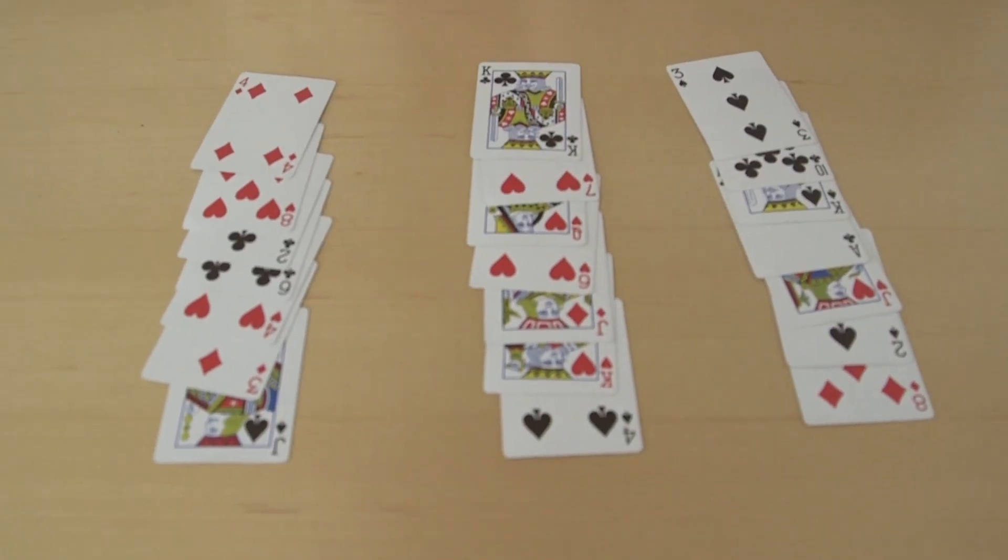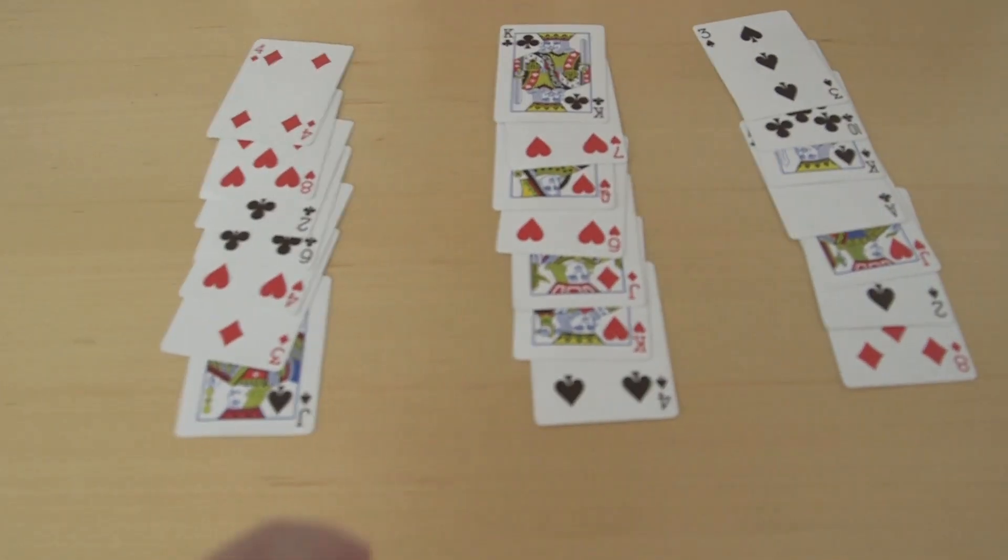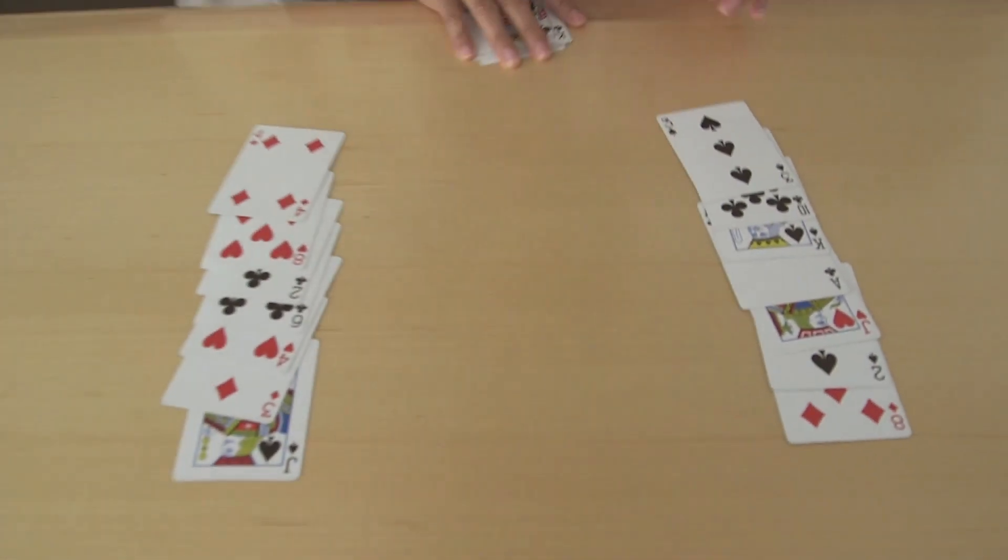Okay so you point to which column you see your card. I see it in this middle one. This one here. Okay perfect.